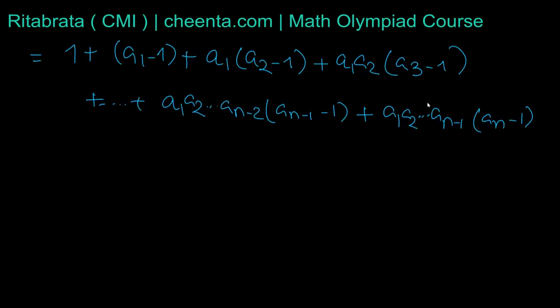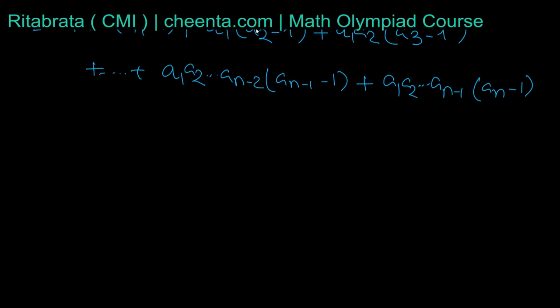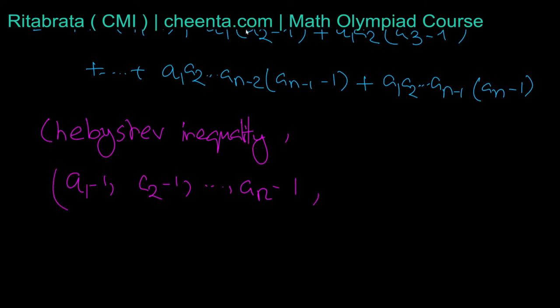Now we can guess how to use Chebyshev inequality. We use Chebyshev inequality on these numbers. For Chebyshev inequality, we need two ordered sequences. First ordered sequence is: a₁ - 1, a₂ - 1, ..., aₙ - 1. And the second sequence should be: 1, a₁, a₁a₂, ..., a₁a₂...aₙ₋₁.